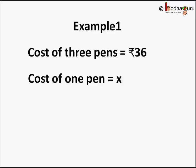Say the cost of each pen is rupees x. Then the cost of three pens will be 3 times x which is equal to 36 rupees. So 3x equal to 36, that is x equal to 36 by 3 which comes out to be 12. That is, the cost of each pen is rupees 12.